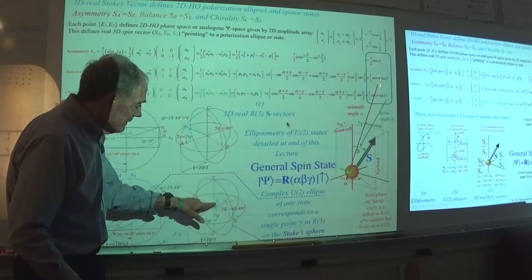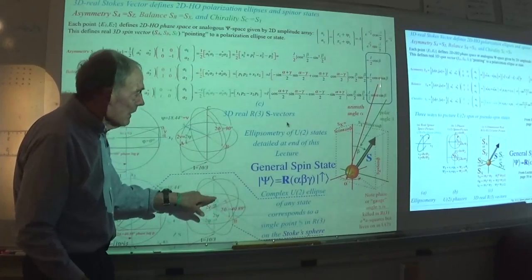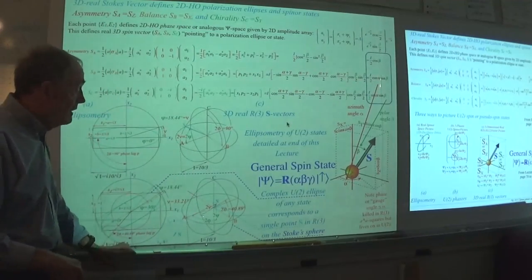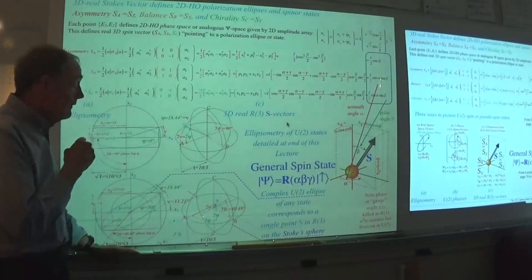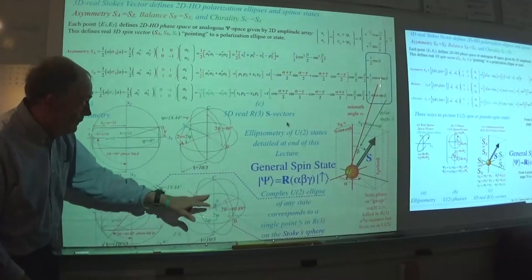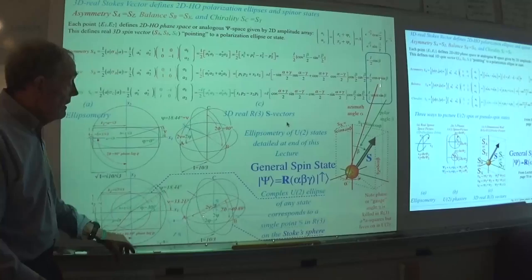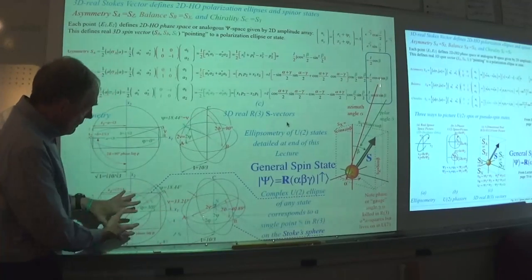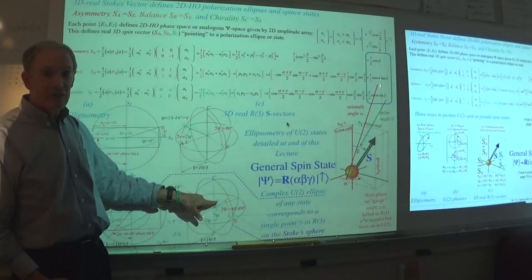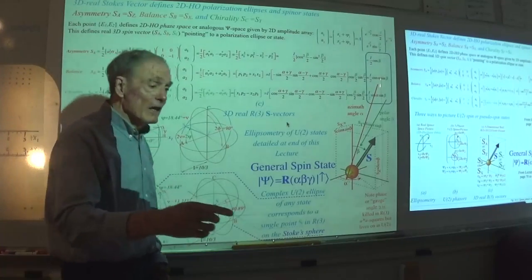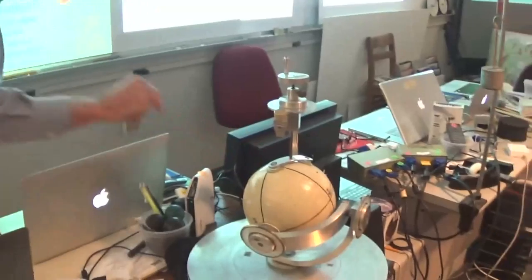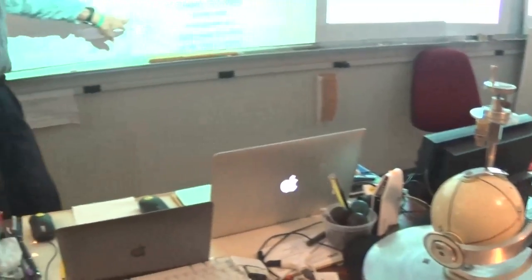A single point on the Poincaré sphere corresponds to a single polarization state. There are four parameters — not just alpha, beta, and gamma, but also the amplitude — describing all possible polarization states. What's neat is that all of this complexity is represented by a single point on a sphere, a single S vector. That S vector tip would be drawn on the graph right there.